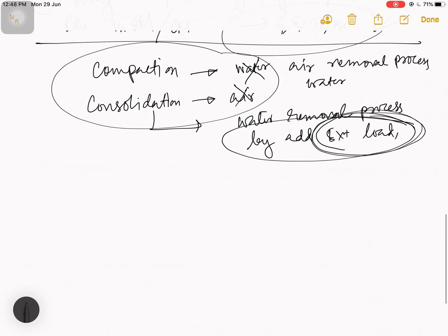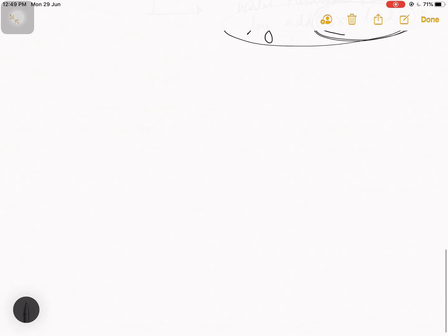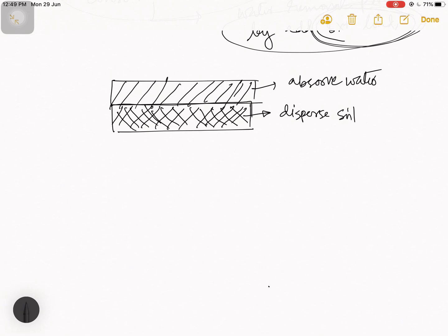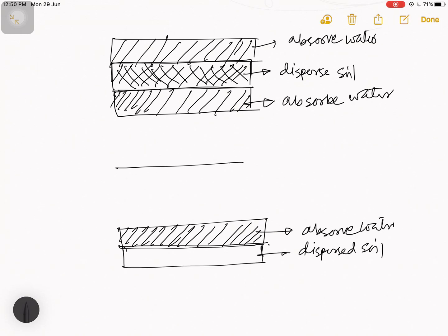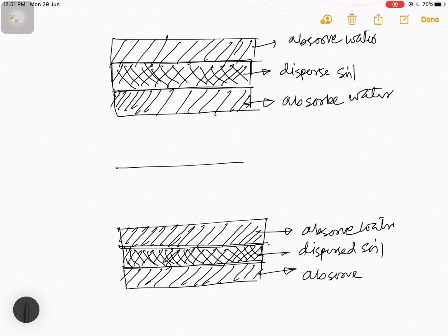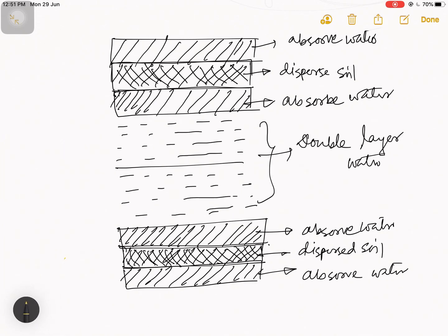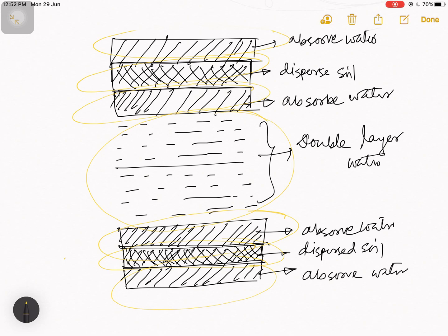Before starting consolidation, let me draw a diagram. In this diagram, this is your adsorbed water, this is your dispersed soil, and these are again adsorbed water layers. If you remember from my last lecture, dispersed soil structure holds water, whereas flocculated soil structure passes the water.